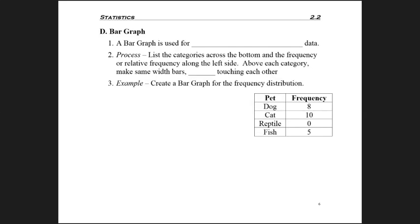The graph called a bar graph is used for categorical data, which can also be called qualitative data. This is more where we're describing something than there's a number to represent it.